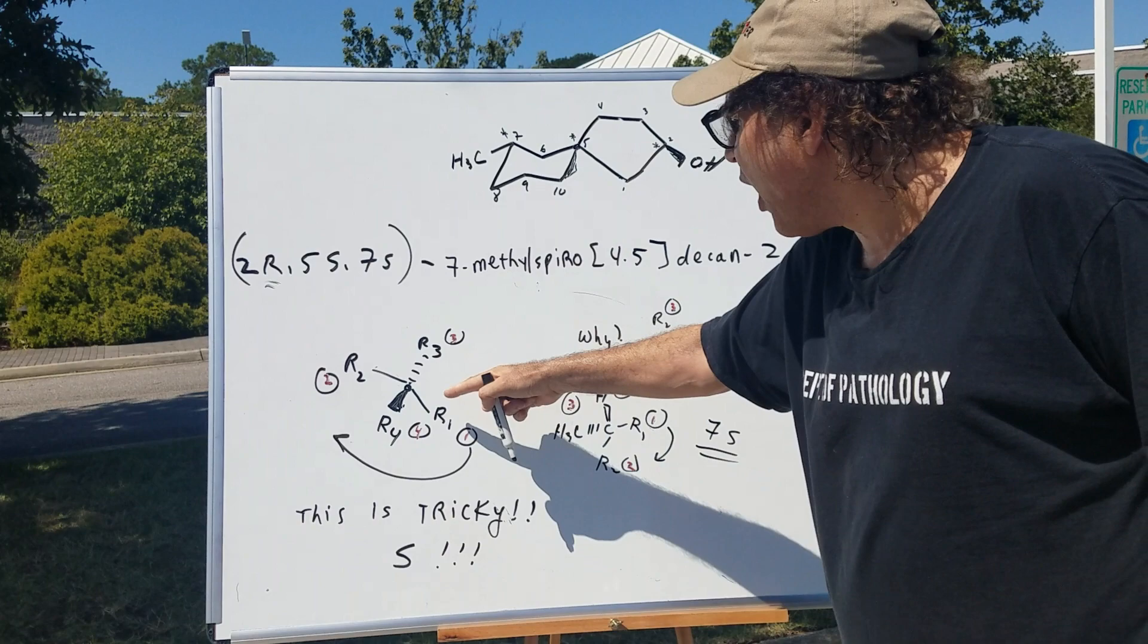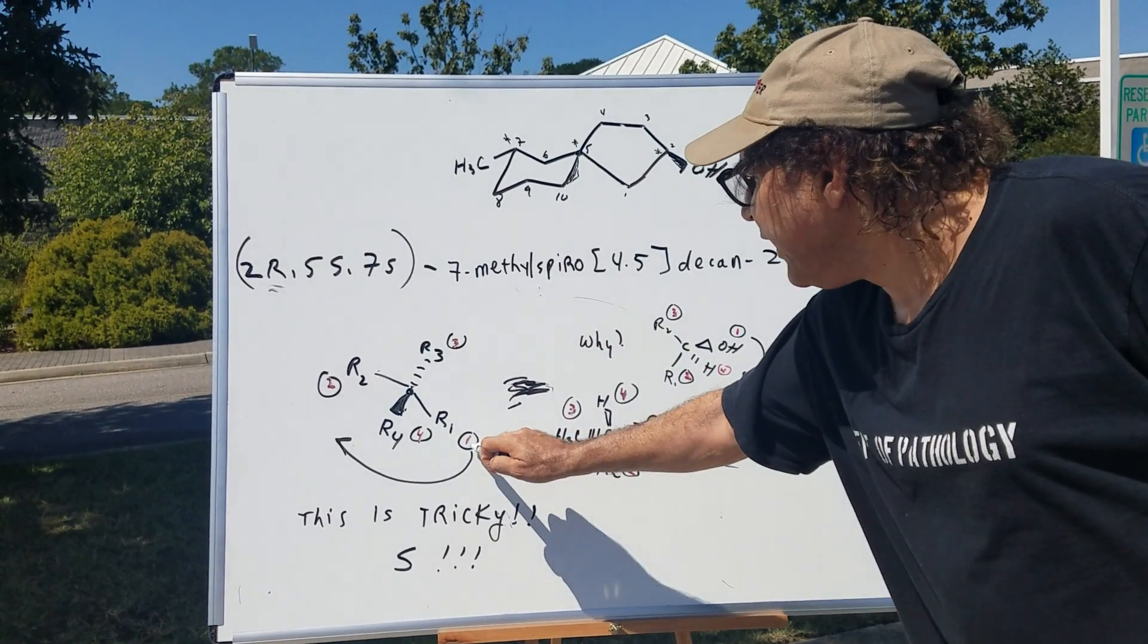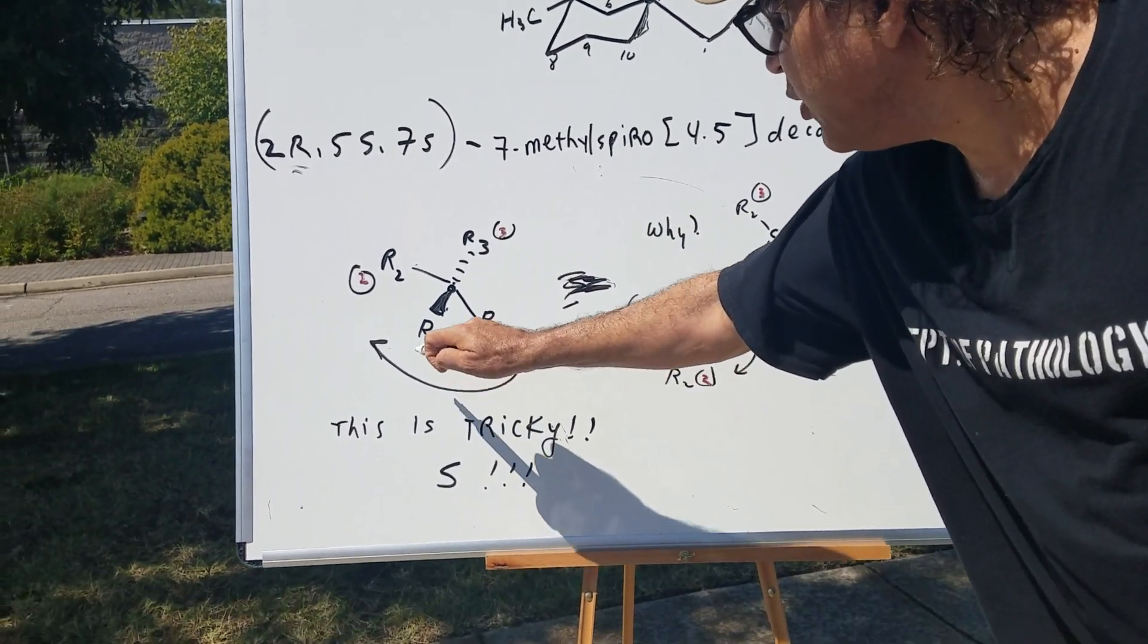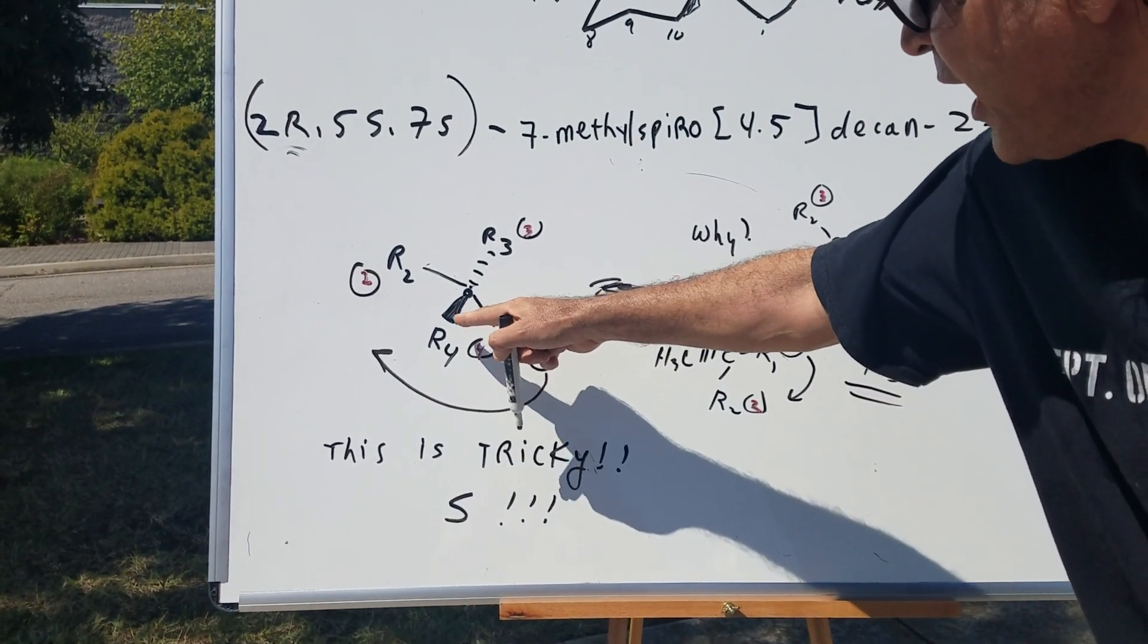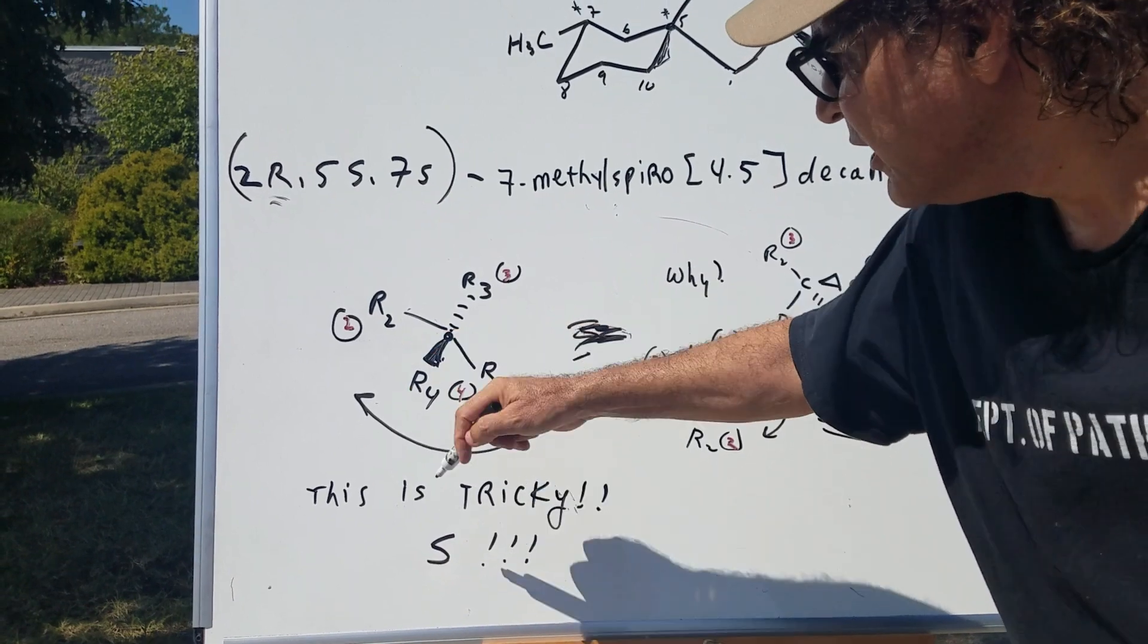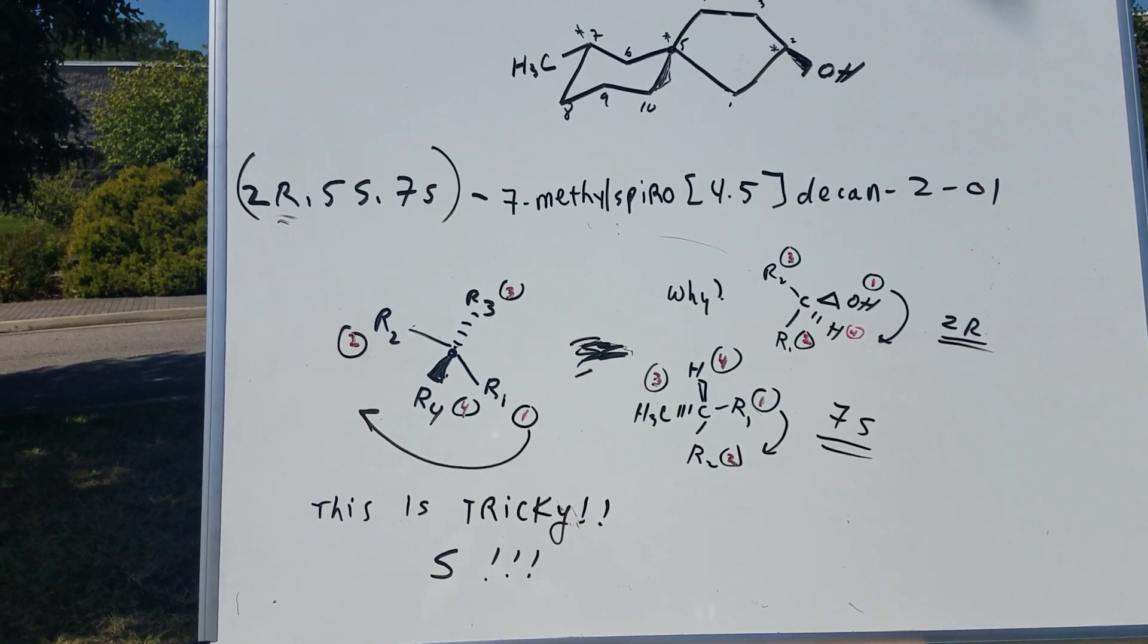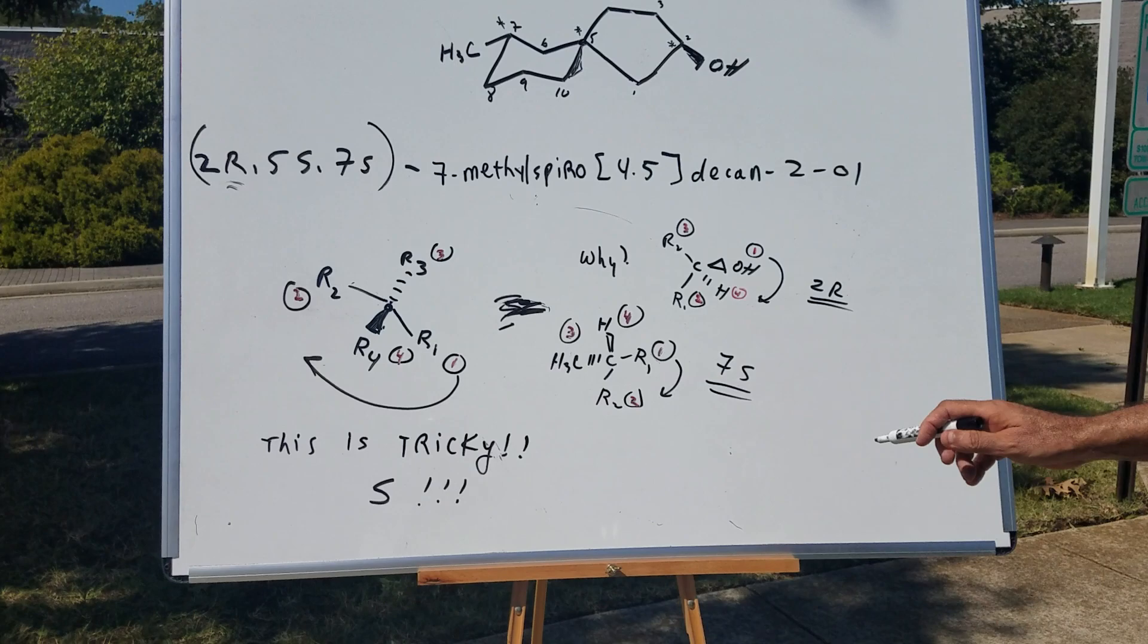Notice, I'm going to connect 1 to 2. It looks like an R. But since group priority number 4 has a wedge, it's going to be opposite. So, that's going to be an S. That is real tricky. So, that's going to give me a 5S.